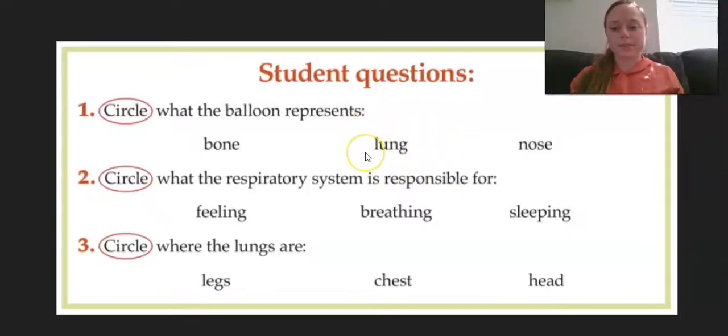Number two. Circle what the respiratory system is responsible for. Feeling, breathing, or sleeping. If you said breathing, you are correct. Number three. Circle where the lungs are. Are the lungs in the legs, chest, or head? If you said chest, you are correct.